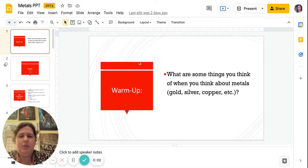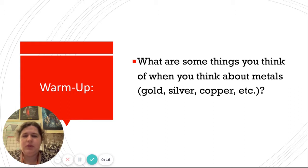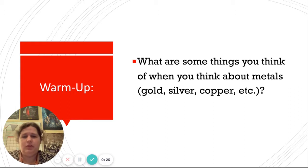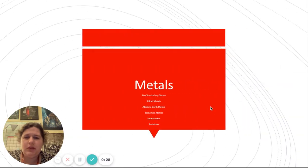Today we're going to be learning about metals. So what are some things you think about when you think about metals, like gold, silver, and copper? Probably you think they're really shiny, they're often used in wires, they're expensive. We're going to be looking at properties of metals today.